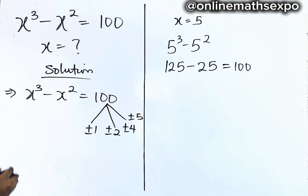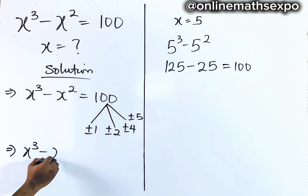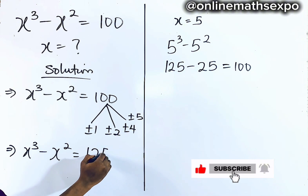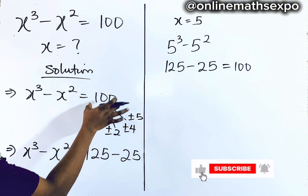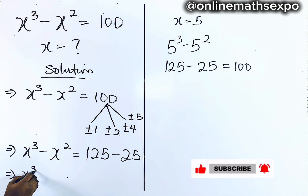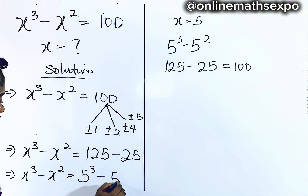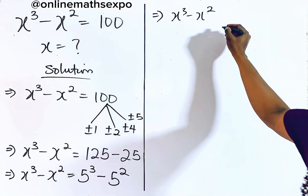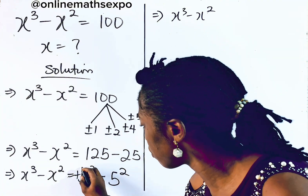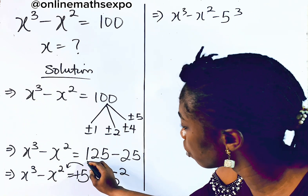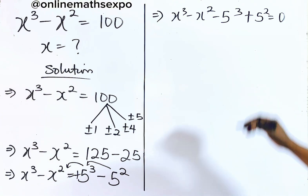So x cubed minus x squared equals 100, and 125 minus 25 gives us back 100. We can write x cubed minus x squared as 5 cubed minus 5 squared. Moving everything to the left side: x cubed minus 5 cubed, minus x squared plus 5 squared, all equal to 0.